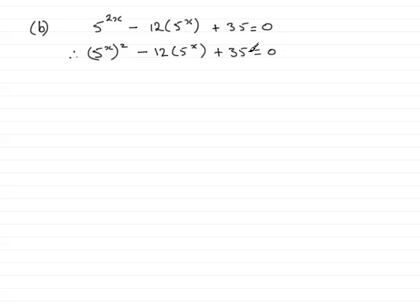What you have here is a quadratic in 5^x. Let me show you. We can say let y = 5^x. Therefore, what you have here is y^2 - 12y + 35 = 0.